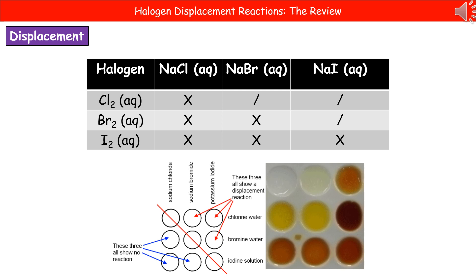Bromine will only react with the sodium iodide because the chloride is obviously more reactive than it, so it can't take the place. And then because iodine is the least reactive of our three, we see no reaction with any of those chemicals.